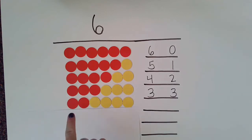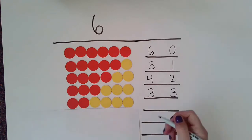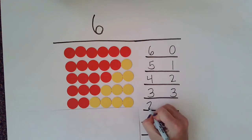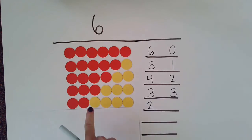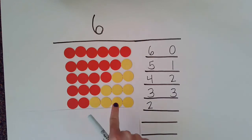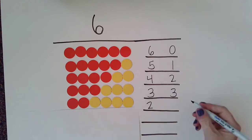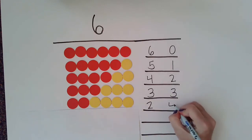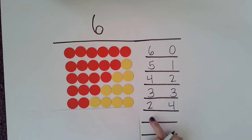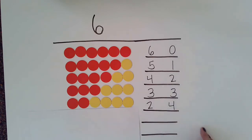Now I have one, two reds and one, two, three, four yellows, knowing that two and four are number partners of six.